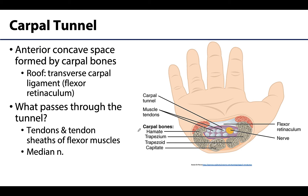If you hold your hand out with your palm facing you, the carpal bones form a concave space. Over the top or roof of this region is the transverse carpal ligament, which connects the bones from one side to the other — it's more of an overarching protective structure than a joint. This ligament is sometimes referred to as the flexor retinaculum, and together with the carpal bones it creates a tunnel, the carpal tunnel, through which a lot of structures pass.